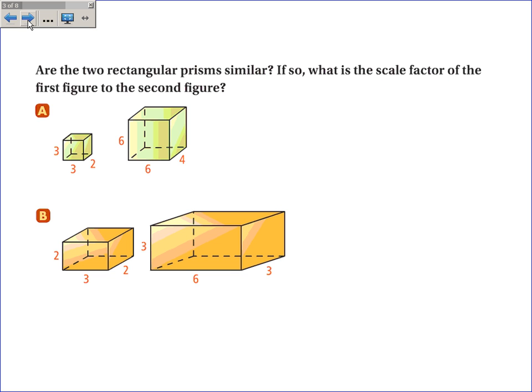Are the two rectangular prisms similar? If so, what's the scale factor of the first figure to the second figure? You'll look to see the corresponding part, 3 to 6. The scale factor is 2, we're doubling. 3 to 6, we're doubling. 2 to 4, we're doubling. So, every dimension doubled is the second one. So, the scale factor is 2, and the answer is yes, they're similar.